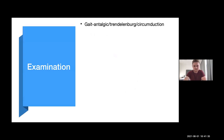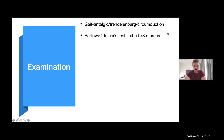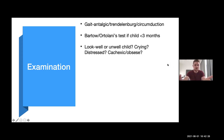Moving on to examination: first assess the patient's gait. The most common is an antalgic gait, which is a pain gait. If there is neuromuscular damage, the child may have a Trendelenburg gait or a circumduction gait, where the leg is essentially swinging. Saying 'circumduction gait' sounds much better in an exam. Always look at the patient — do they look well or unwell? Children don't hide it well if they're in severe pain.